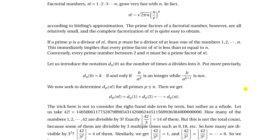N factorial — that's the name of it — is defined as the product of positive integers from 1 up to n. When you think about n factorial as a function, it's a really fast-growing function. Even just 10 factorial or 30 factorial is a really quite big number.